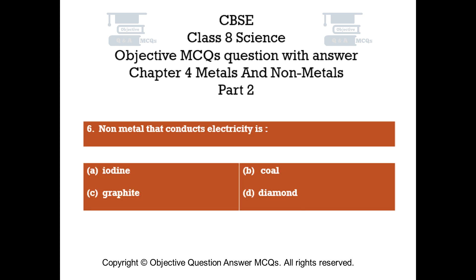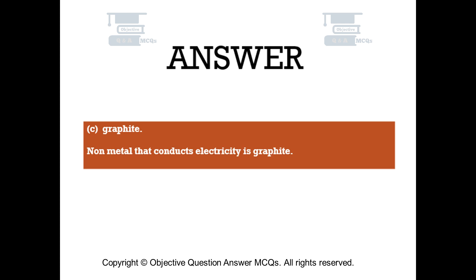Question number 6: Non-metal that conducts electricity is — Option A: Iodine. Option B: Coal. Option C: Graphite. Option D: Diamond. The right answer is Option C — Graphite. The non-metal that conducts electricity is graphite.